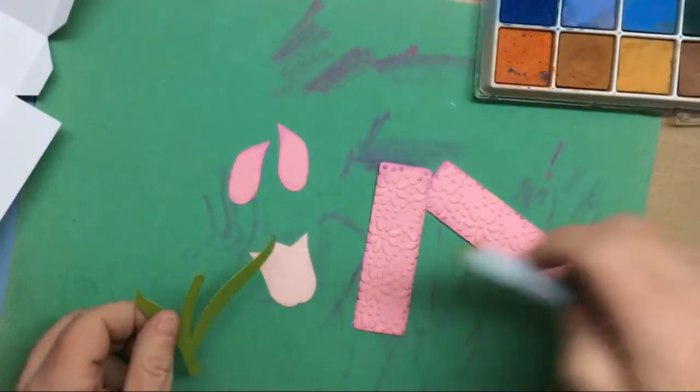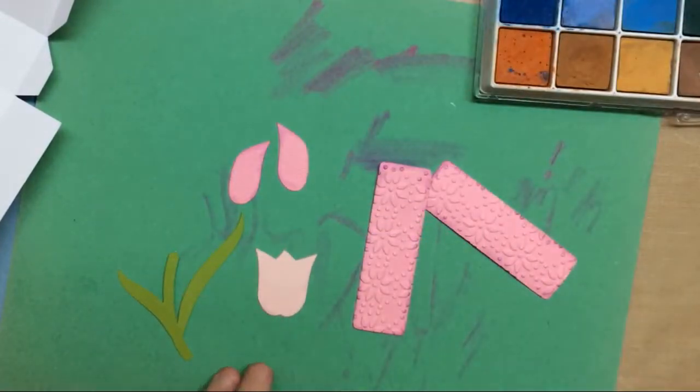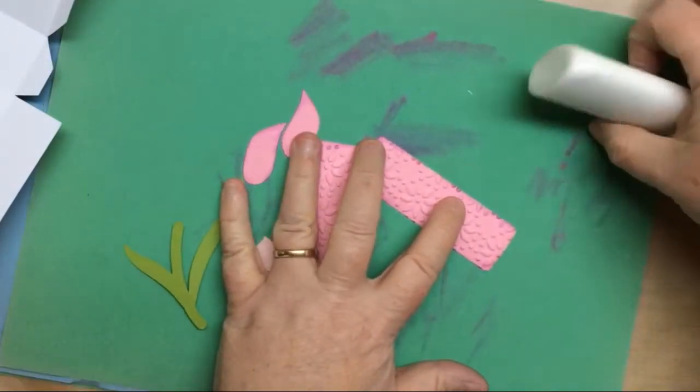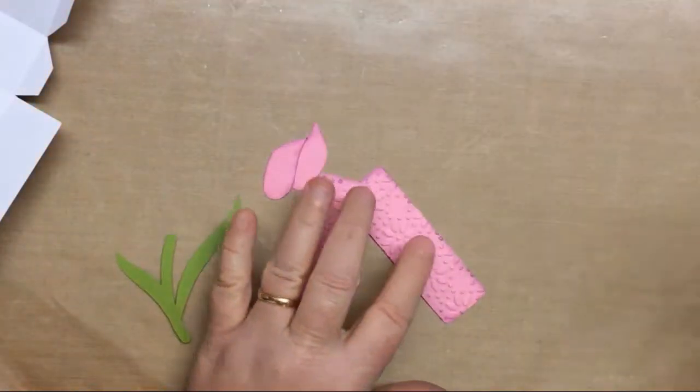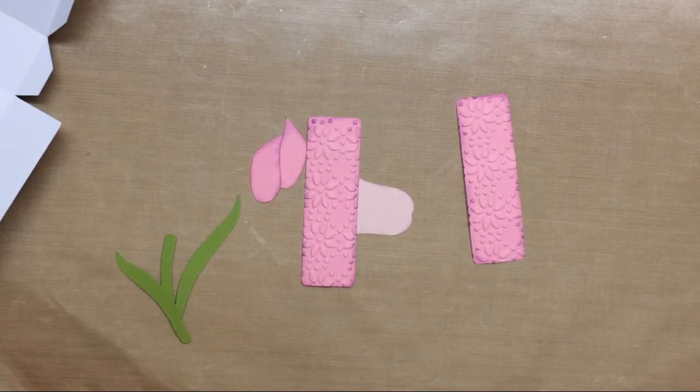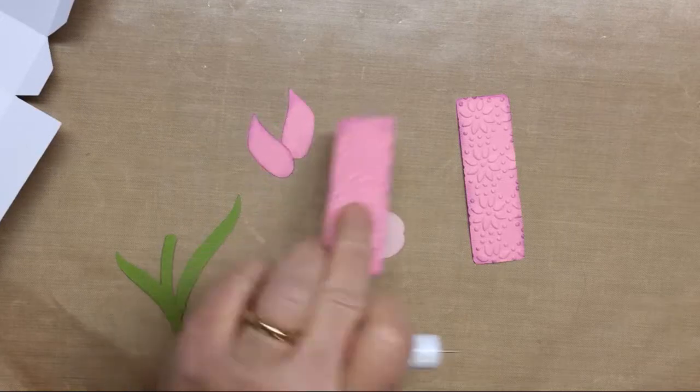Then once we have that done, and I also actually, before I go on, I do this on a piece of paper because I can move it when I'm done. So I don't have to worry about wiping off my mat and having excess chalk. So that's the reason why I had that little piece of paper there.